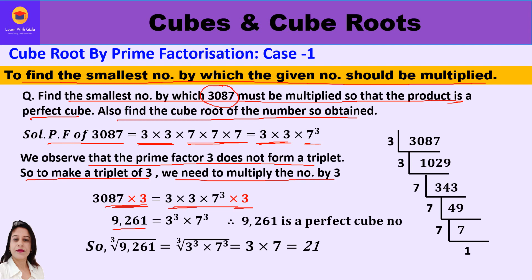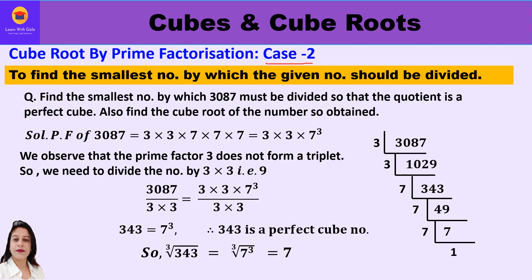Since the prime factor 3 does not form a triplet, we need to multiply the number by 3 to make a triplet. So 3087 × 3 gives us 9261, and now we have 3 cube × 7 cube, making 9261 a perfect cube. The question also asks for the cube root of the number obtained, so: cube root of 9261 = cube root of 3 cube × 7 cube = 3 × 7 = 21. Therefore, the cube root of 9261 is 21.